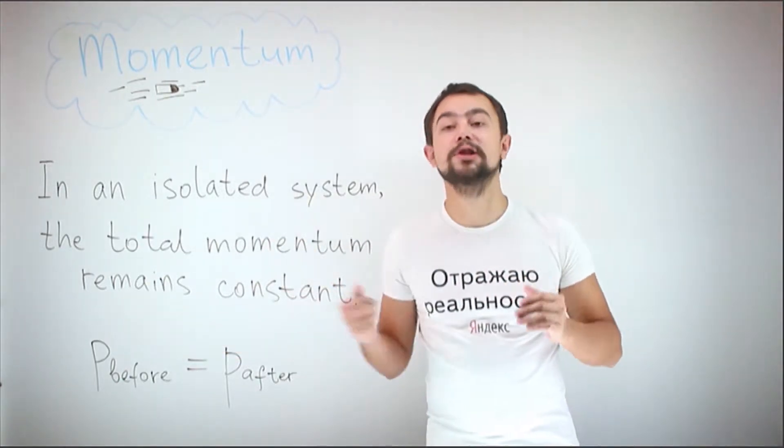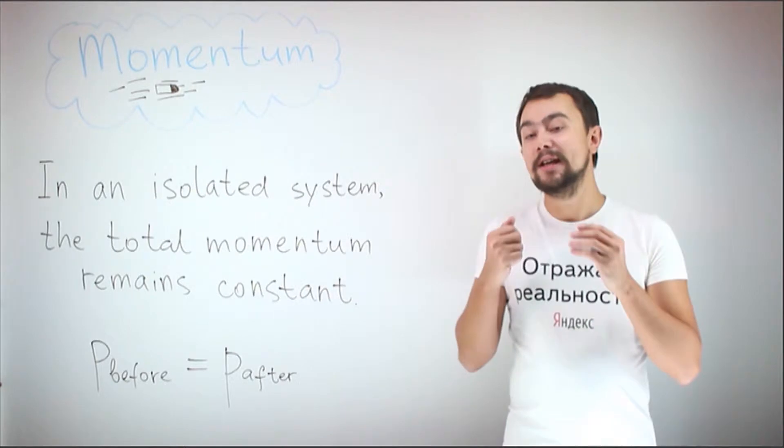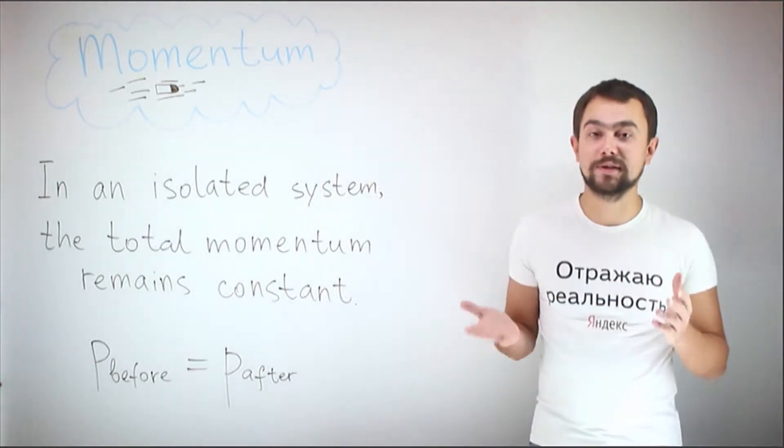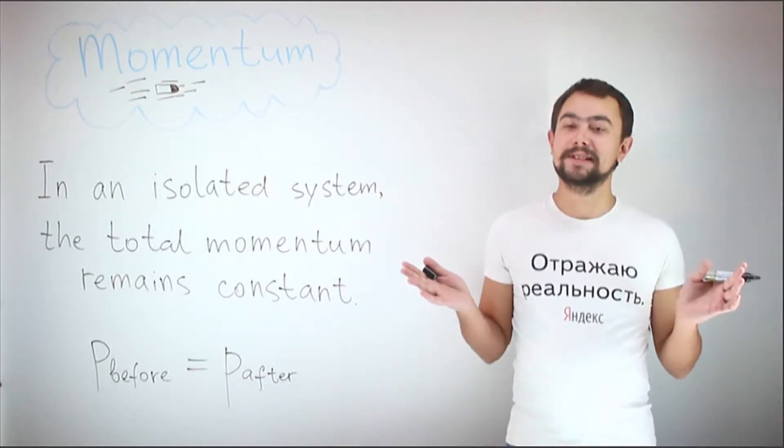In other words, the total momentum of the bodies before the interaction is equal to the total momentum of the bodies after the interaction.